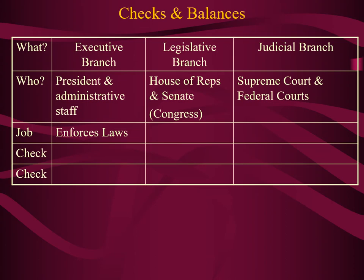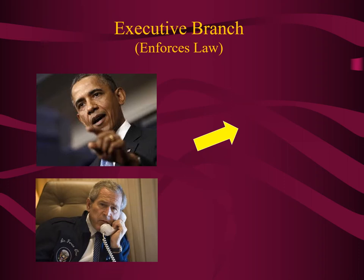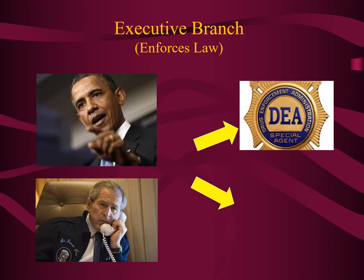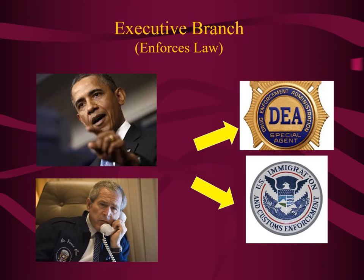A quick two-word description can identify the job of each branch. The executive branch has the job of enforcing laws. People sometimes get confused as to the president's actual role, but presidents like Obama and Bush are the ones who enforce laws passed by Congress — for example, by providing direction to organizations like the Drug Enforcement Agency or Immigration and Customs Enforcement Services.